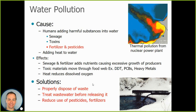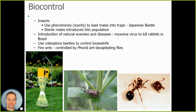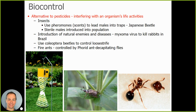An interesting way to reduce pesticide use is biocontrol — using one organism to try to control another. For example, in a classroom activity, beetles were raised and released into the Utica marsh in hopes that they would destroy loosestrife plants. Rather than spraying pesticides to kill the loosestrife, another organism was used — that's biocontrol.